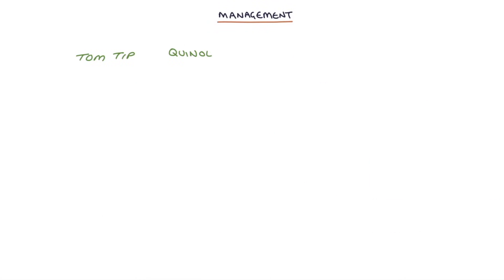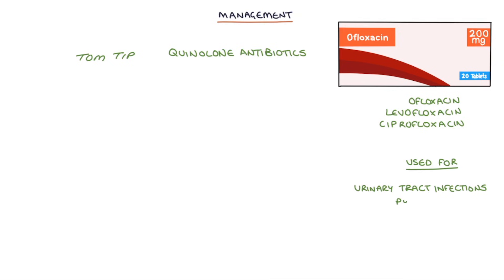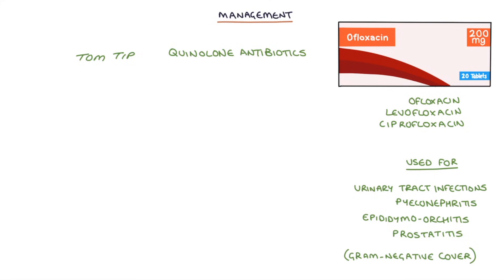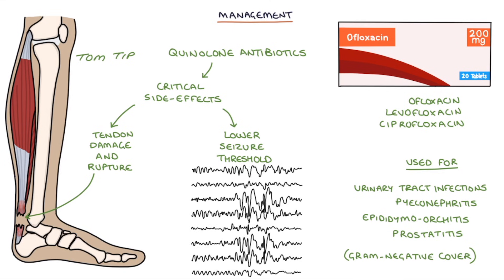A top tip for you: quinolone antibiotics such as ofloxacin, levofloxacin, and ciprofloxacin are powerful broad-spectrum antibiotics often used for urinary tract infections, pyelonephritis, epididymoorchitis, and prostatitis. They give excellent gram-negative cover. It's worth remembering two critical side effects, as these may be tested in exams and are essential to inform patients about: tendon damage and tendon rupture, notably of the Achilles tendon, and they lower the seizure threshold, so they need to be used with caution in patients who have epilepsy.